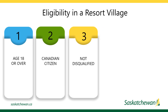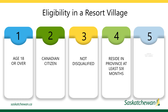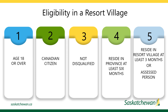The candidate eligibility requirements if you are running for an election in a resort village are the common requirements plus you must have resided in Saskatchewan for at least six consecutive months, and either resided in the resort village or on land now in the resort village for at least three consecutive months before the nomination paper is submitted, or be the assessed person of property in the resort village for at least three consecutive months before submission, or be the spouse of a person that meets the previous criteria.